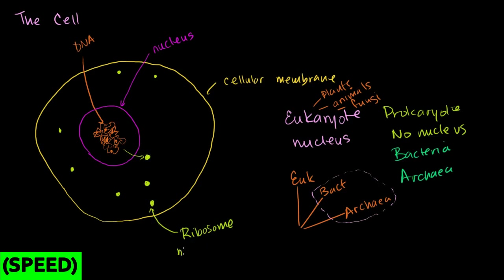Ribosomes are where mRNA — transcribed inside the nucleus from DNA — gets translated into proteins. You can view them as a place where information actually turns into proteins, which can then be used anywhere in the cell. Ribosomes are made up of proteins and RNA. Some components are made by proteins produced in other ribosomes. Within the ribosome itself, ribosomal RNA is actually part of the structure and helps the ribosome function — it's not used for information purposes like normal mRNA.